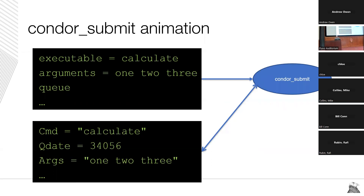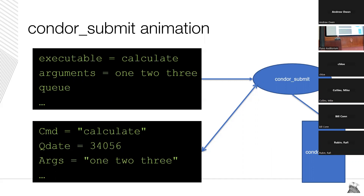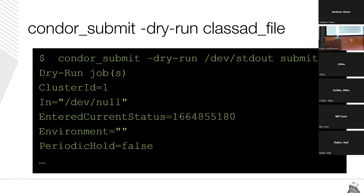Sometimes you might want to know what that ClassAd looks like, or more precisely, what the translation looks like when going from the submit language to the ClassAd language. As TJ showed, there can be variable expansion and other things going on — it's not necessarily a one-to-one translation. To see this, you can use the --dry-run command, which is very handy for debugging your submit file. It takes the name of an output file and gives you output like this, shown shortened on the screen.